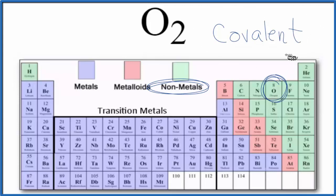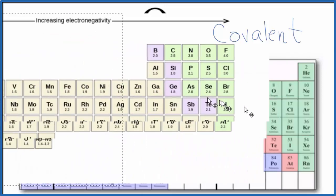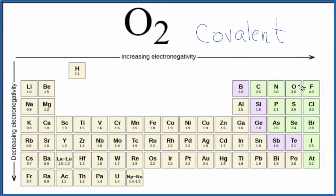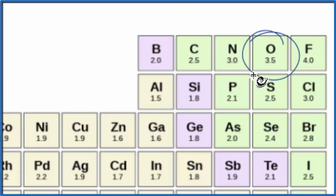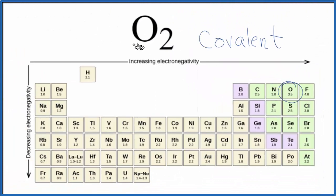Let's take a look at electronegativities. Here's oxygen, and we can see that oxygen has an electronegativity value of 3.5. It's pretty electronegative, but it's 3.5 for both of the oxygen atoms. They're the same,